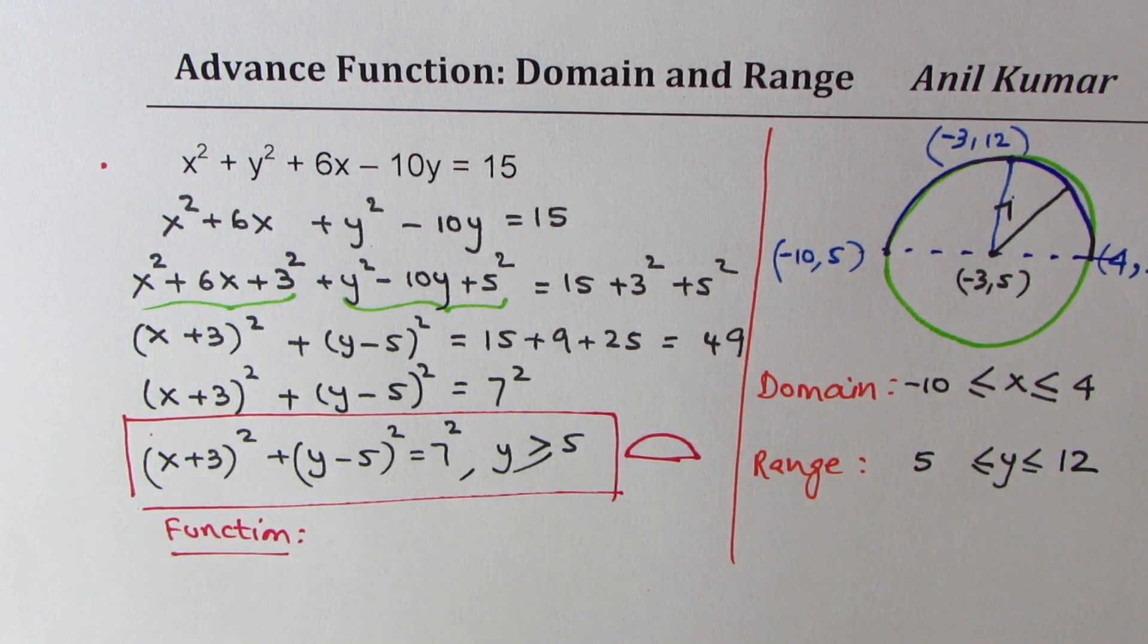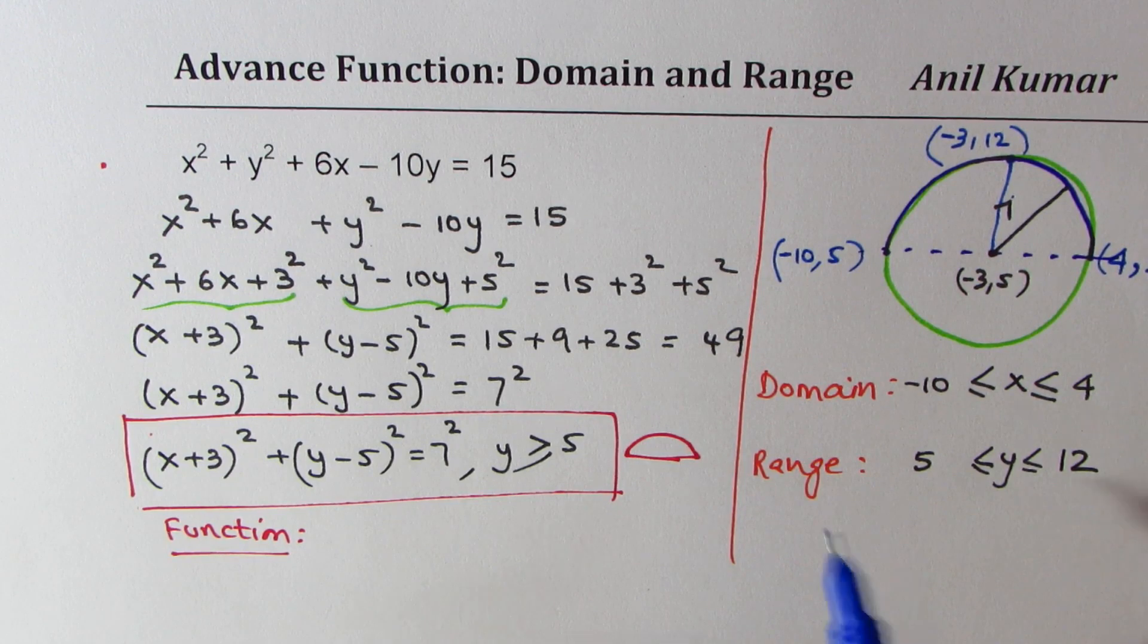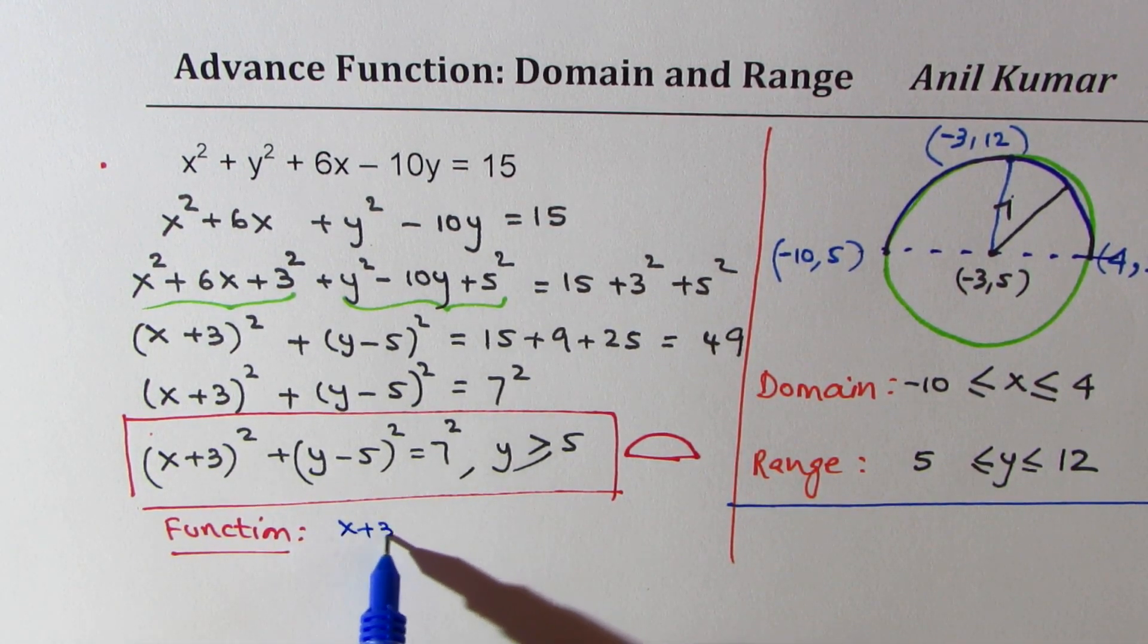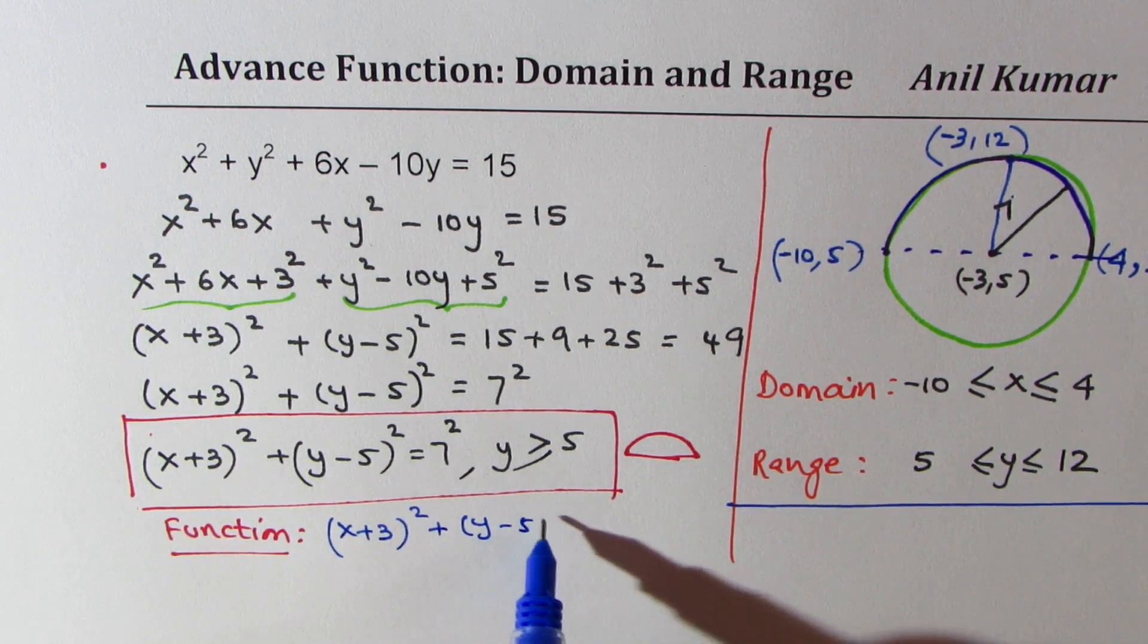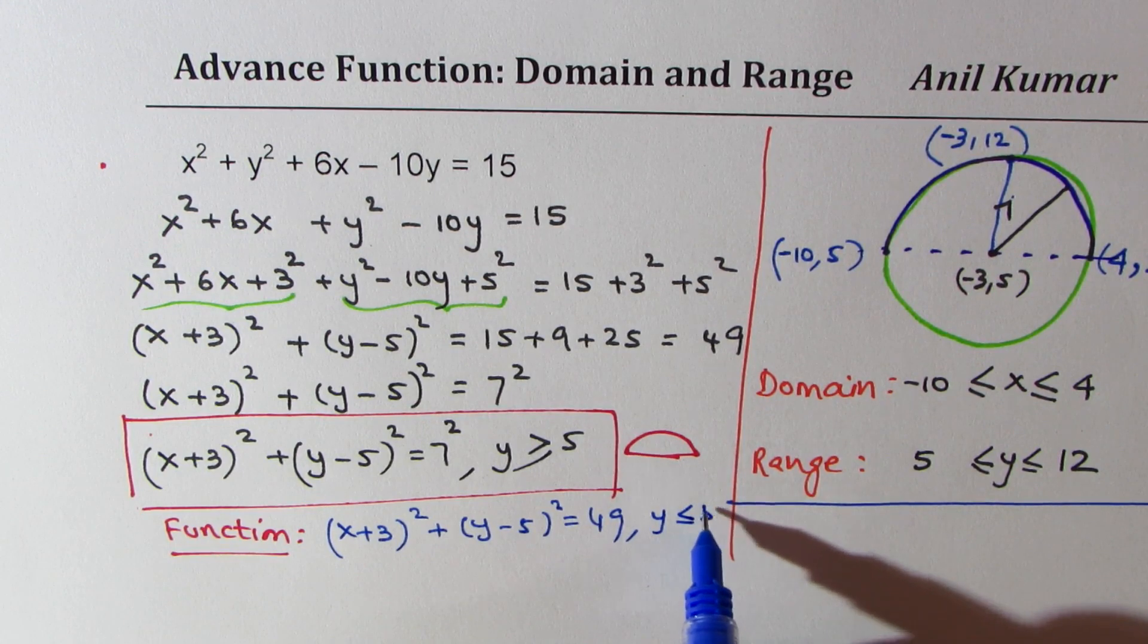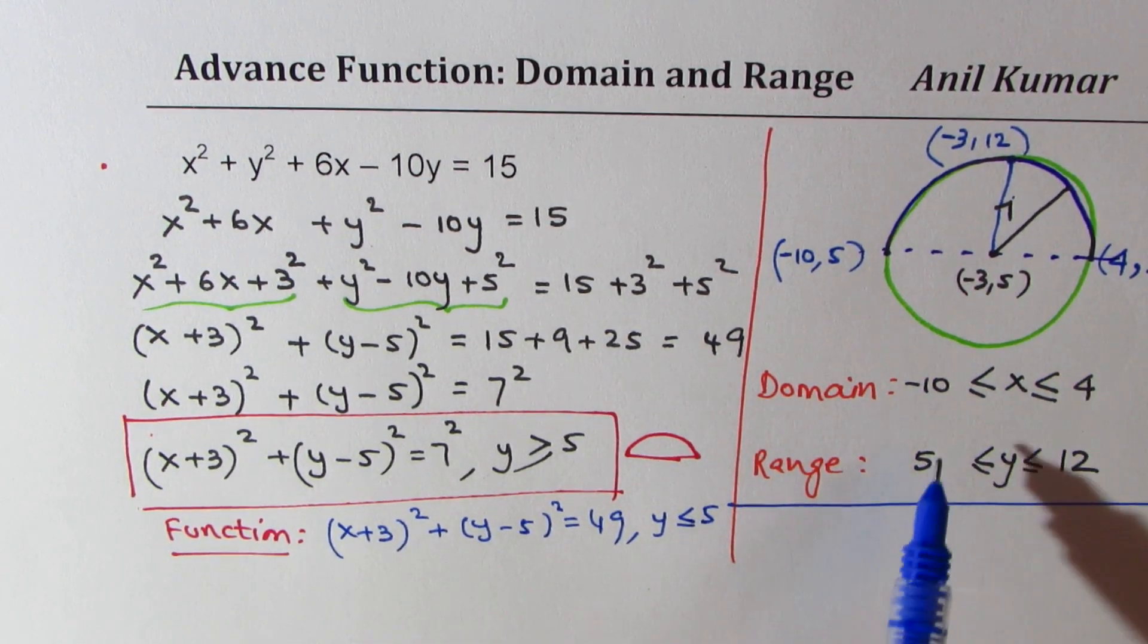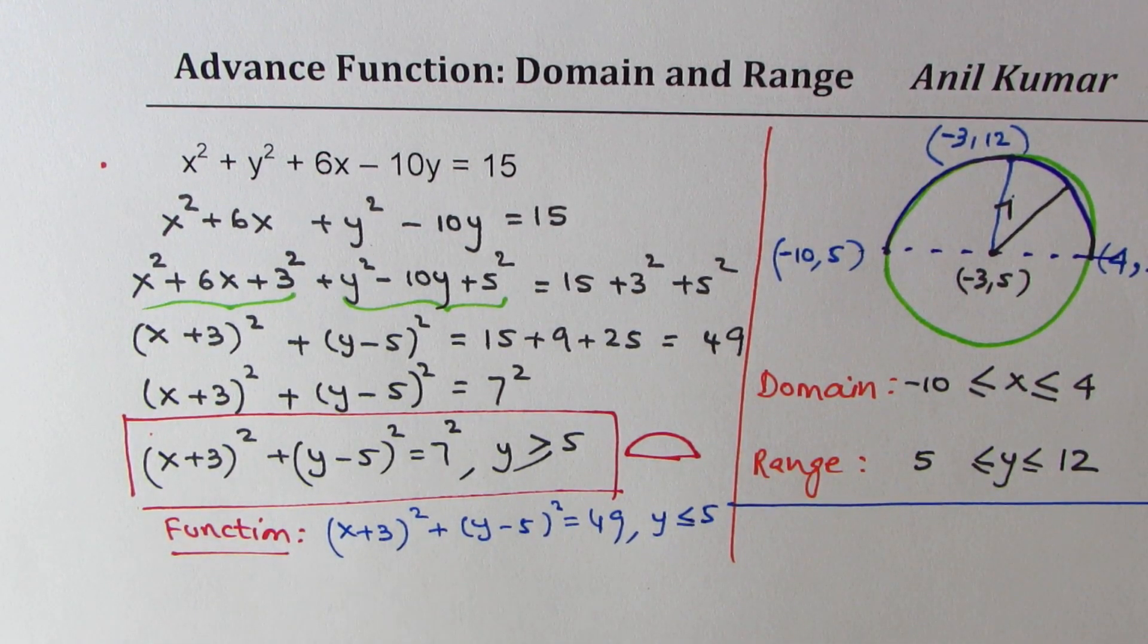You see that. So that is for the upper half of our function. The other function could be x plus 3 whole square plus y minus 5 whole square equals to 49 or 7 square where y is less than equal to 5. Is that okay? That is also a function, the lower half. I would like you to write domain range for that function as just as a practice question.